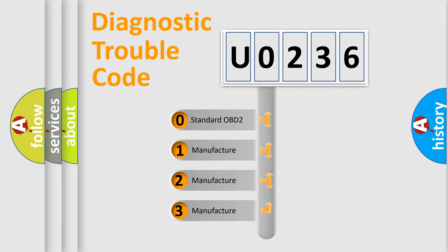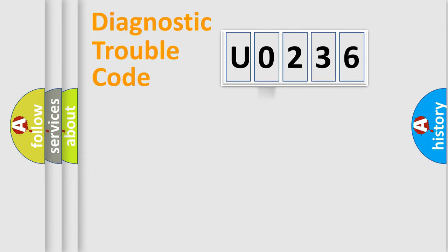If the second character is expressed as zero, it is a standardized error. In the case of numbers 1, 2, 3, it is a more specific expression of the car-specific error.